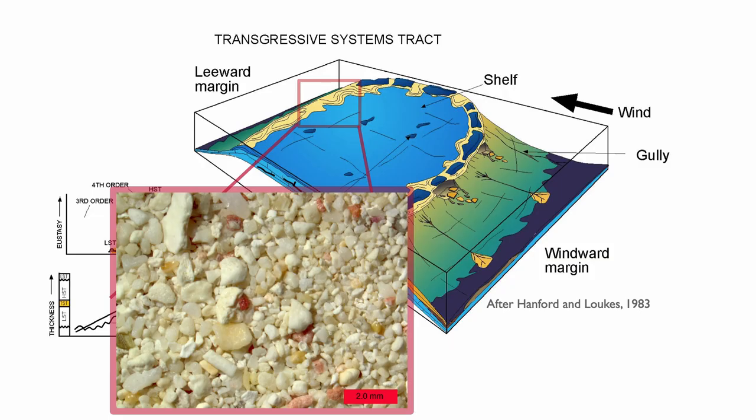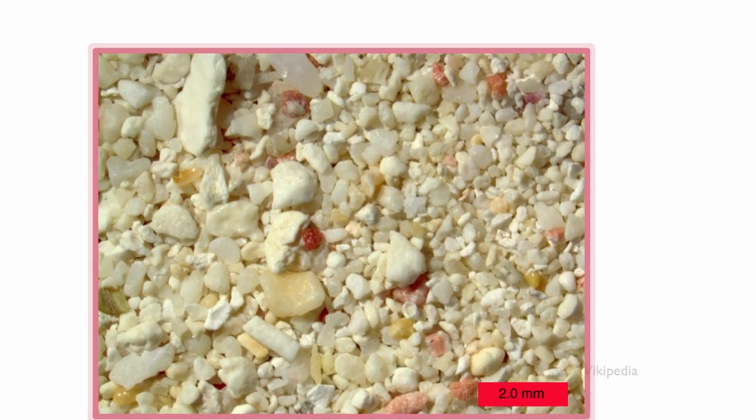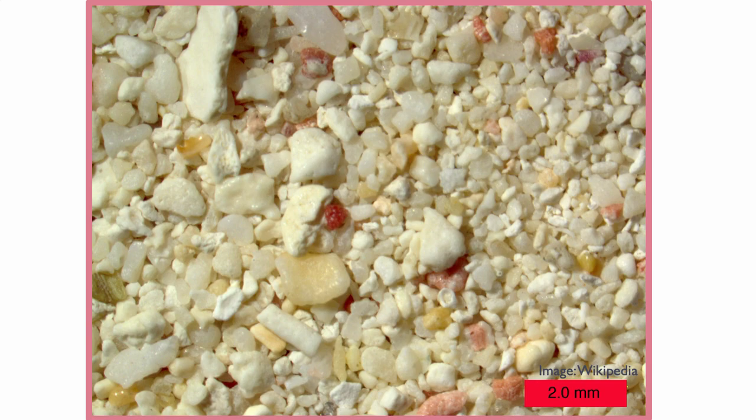On the leeward side, we tend to have more sandy deposits — typically skeletal sand or oolitic sand. These can be great reservoirs. It's good to know where the prevailing wind directions are, because that implies some heterogeneity but also asymmetry in where your different deposits are.